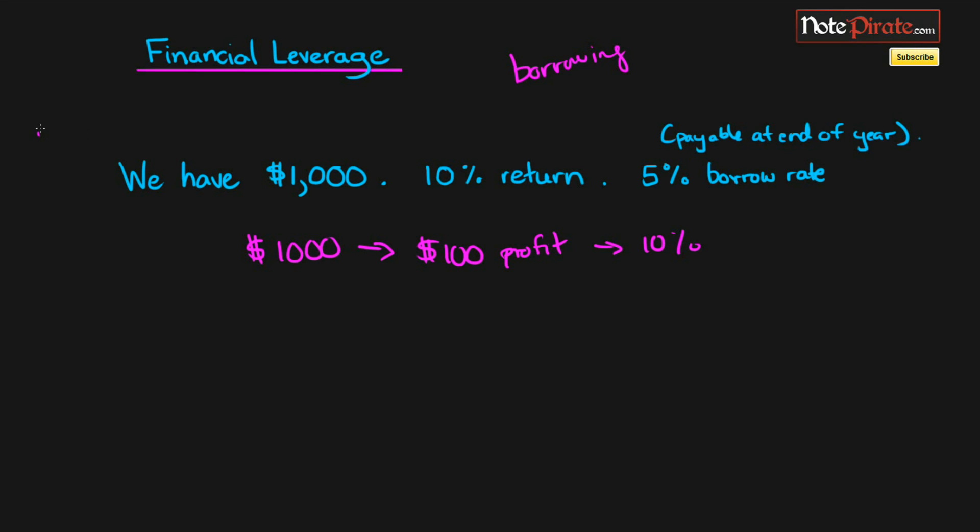Let's say we borrow 2 to 1 and we now have $2,000, and we're going to have to owe them interest at the end of the year. With the 10% return, we're going to get $200 of profit. But of course we also have to pay back the interest.